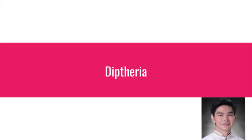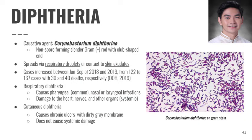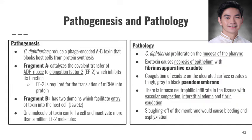Diphtheria is caused by the bacteria Corynebacterium diphtheriae, a non-spore-forming slender gram-positive rod with club-shaped ends, and spreads via respiratory droplets or contact with skin exudates. Diphtheria has two forms: respiratory and cutaneous. For pathogenesis, it has two fragments — fragment A catalyzes the covalent transfer of ADP-ribose to elongation factor 2, which inhibits its function, while fragment B facilitates entry of the toxin into the host cell. The exotoxin causes necrosis of the epithelium with fibrinous exudates.